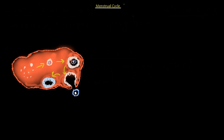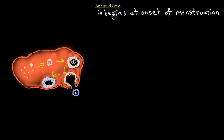The menstrual cycle begins at the onset of menstruation. Menstruation is the typical period that lasts about four to eight days, depending on the female and other factors. This image shows the ovary and the stages that lead up to ovulation, representing the ovarian cycle.